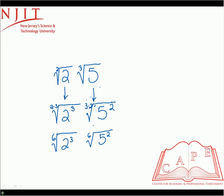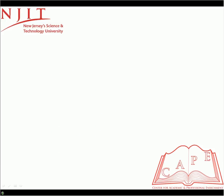So now that they both have the same root, now we can actually multiply them together and bring them together underneath one radical. So it's all going to be under root 6. So now it's 2 to the third and then just multiply times 5 squared.